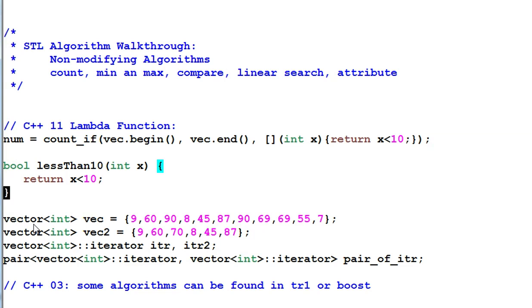And following are the variables that I'll be using: vector of int, vec and vec2, iterators iter and iter2, and a pair of iterators, pair of iter.